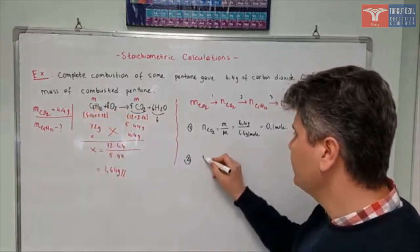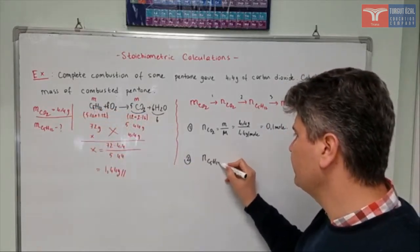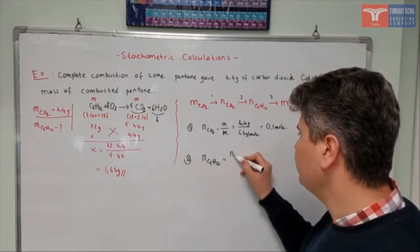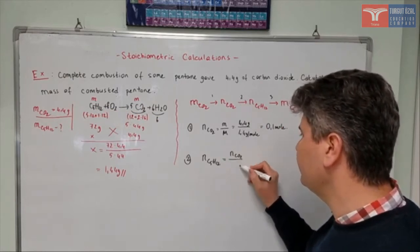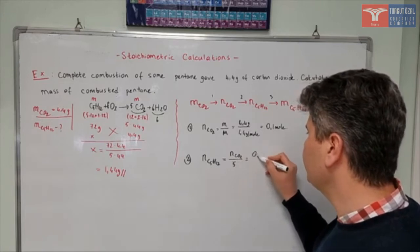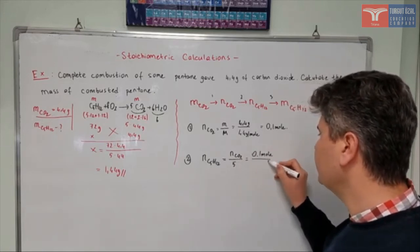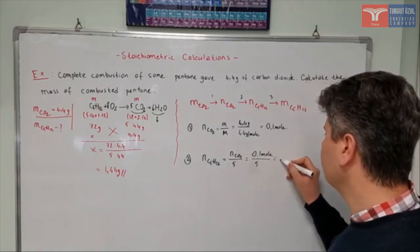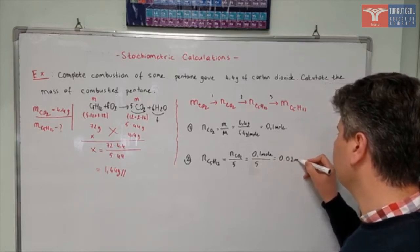So I'll say that mole number of C5H12 is equal to mole number of carbon dioxide divided by 5. So it's going to be 0.1 mole divided by 5, it's going to be 0.02 mole.